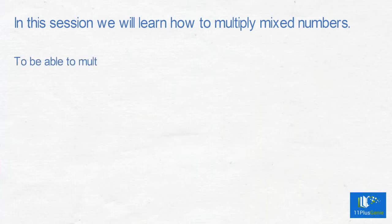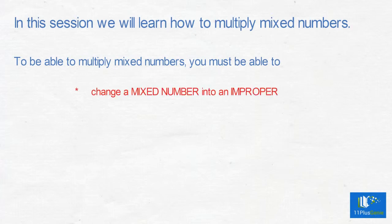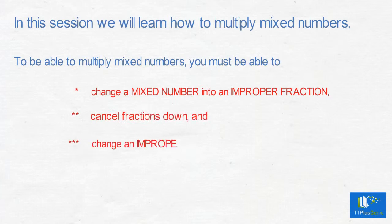To be able to multiply mixed numbers you must be able to change a mixed number into an improper fraction, cancel fractions down, and change an improper fraction back into a mixed number.